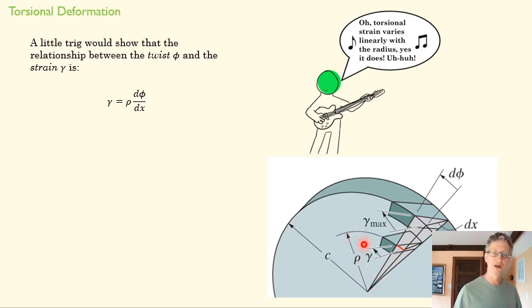I'm not sure why the textbook uses rho as their radius instead of r, but they do, so we're going to stick with that. As we move out towards the edge of our circular member, our strain is going to increase. As our musician here is telling us, that means strain increases linearly with the radius.